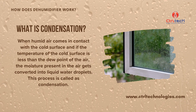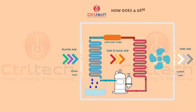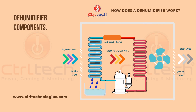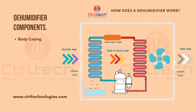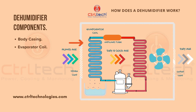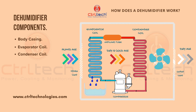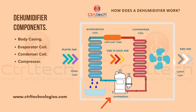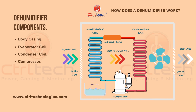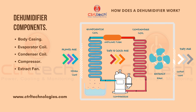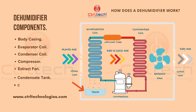A condensation dehumidifier uses the same principle to remove humidity from the air. To understand the working of a compressor dehumidifier, you need to understand its components. It has a body casing which houses all the components. It has an evaporator coil where the actual condensation happens. It has a condenser coil which is used to reheat dry cold air. It has a compressor — the heart of the refrigerant cycle — which increases the pressure of the refrigerant gas. The refrigerant gas enters the compressor at low pressure and low temperature and leaves at high pressure and high temperature. It also has an extract fan to pull humid air into the dehumidifier, and a condensate tank to collect the condensate water.